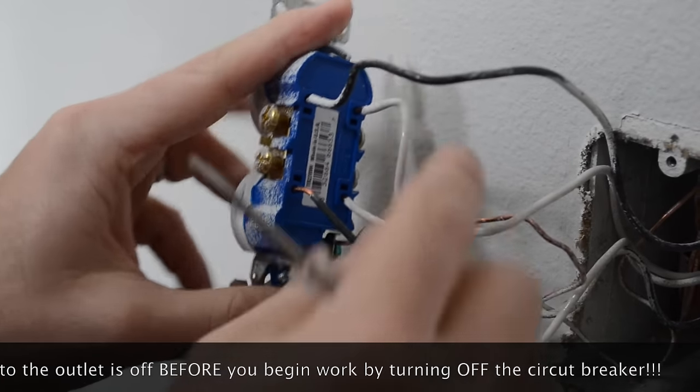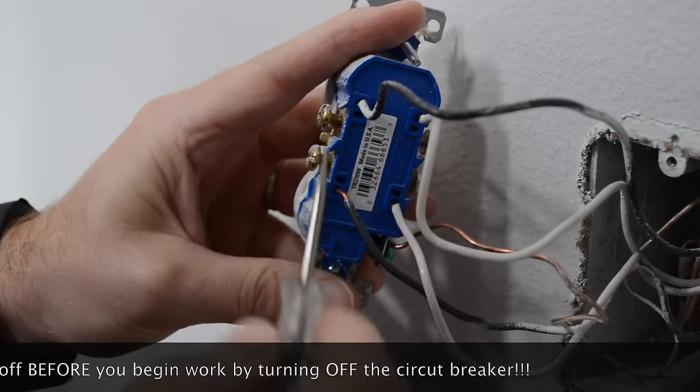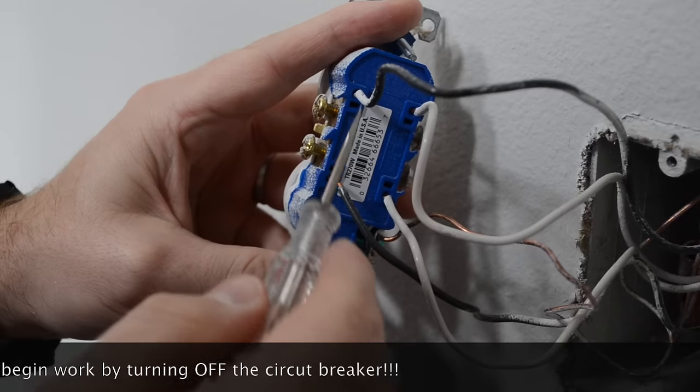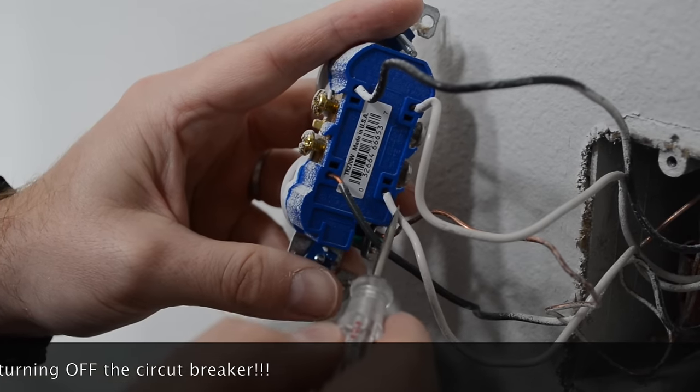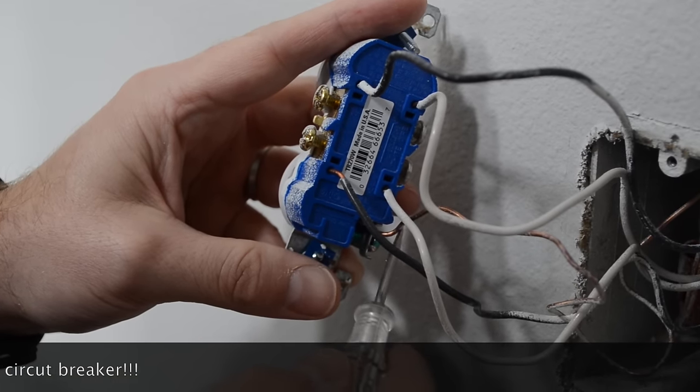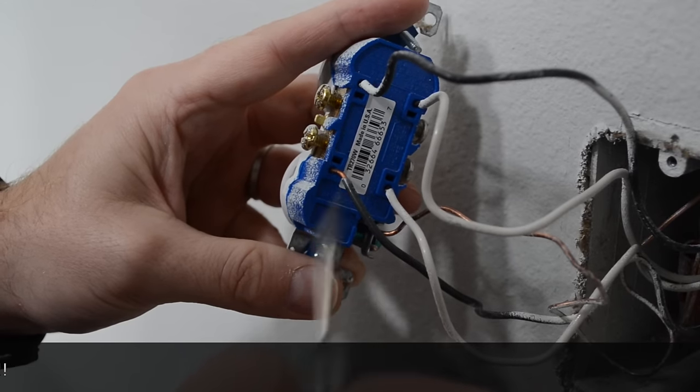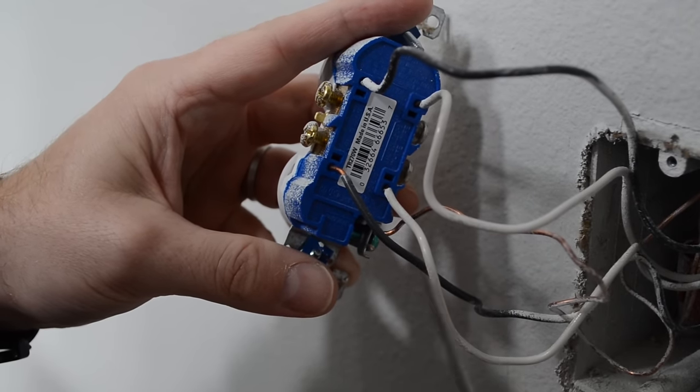So you'll see on this outlet there are four wires: two black, two white, and also a fifth wire which is copper. The copper wire is just screwed in so that's easy to remove.